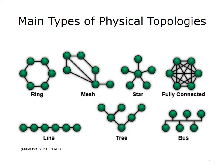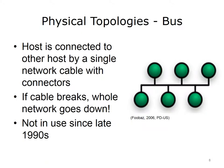There are many physical topology types. The main types are shown in the figure on the screen: ring, mesh, star, fully connected, line, tree, and bus topology. One physical topology is known as a bus. Each host is connected to every other host by a single network cable with connectors. Each green dot in the figure represents a host. If any cable breaks, the whole network goes down. This type of network was not very reliable or scalable and has not been in use since the late 1990s.